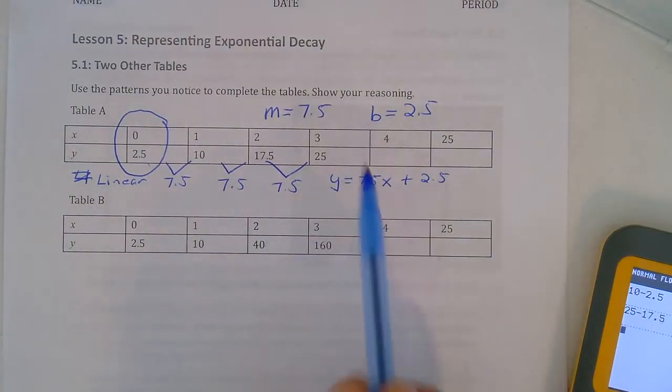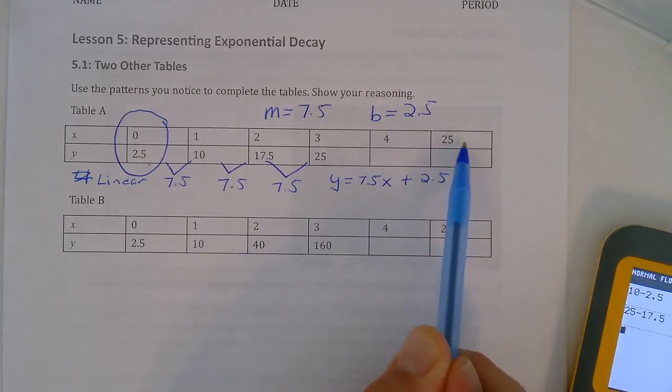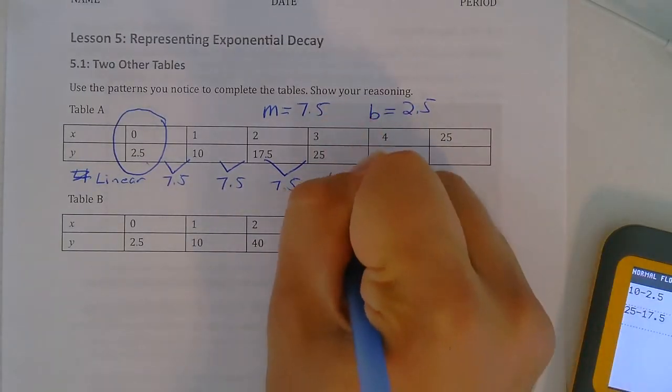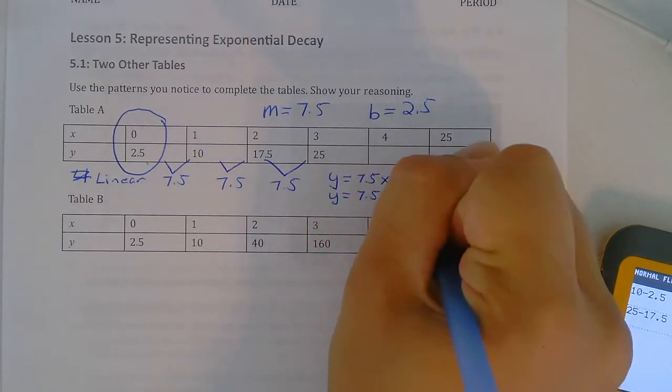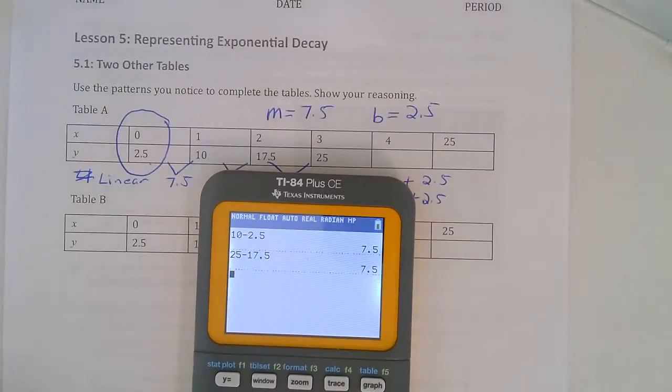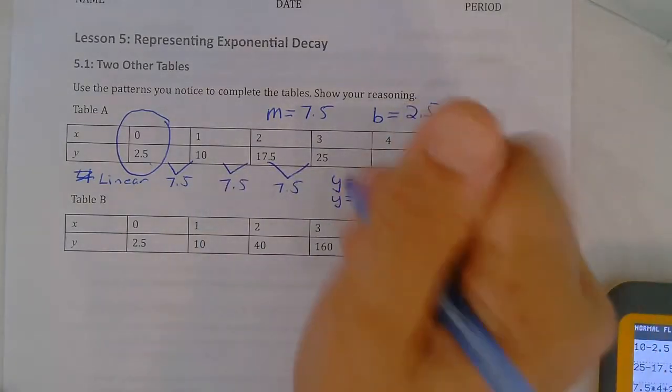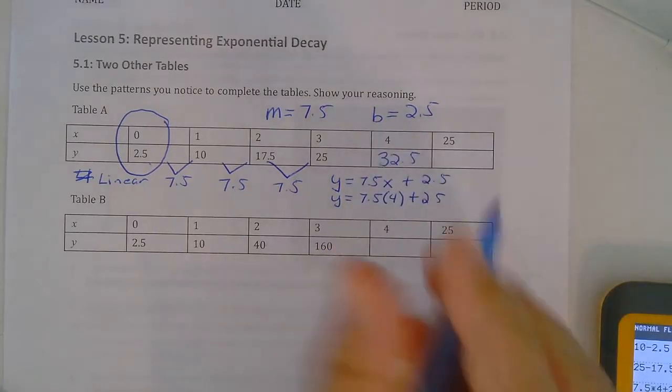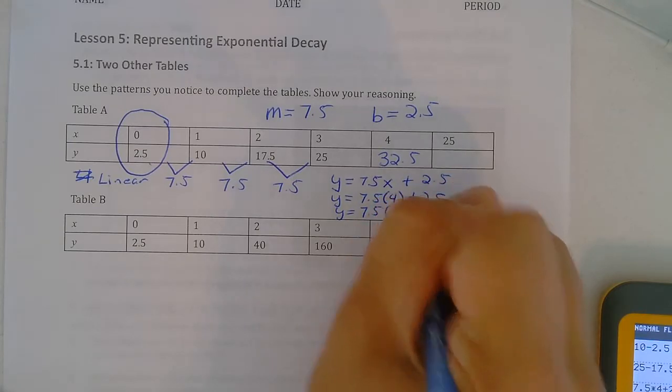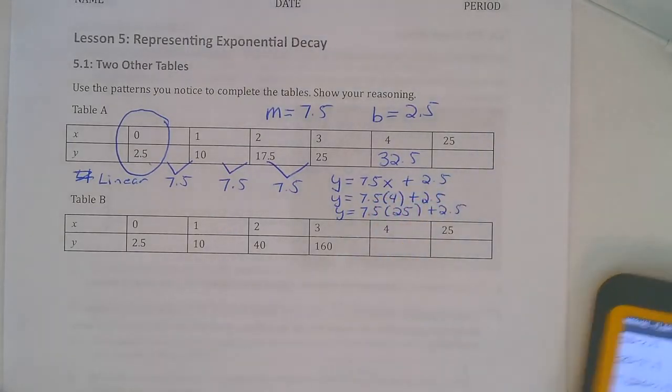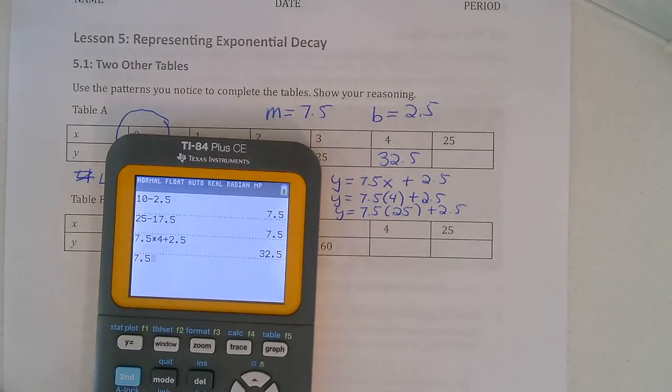And now I can use that equation to solve for y when x is 4 and when x is 25. So you go y equals 7.5 times 4 plus 2.5, and that gives us 32.5. Then here y equals 7.5 times 25 plus 2.5, and there we get 190.